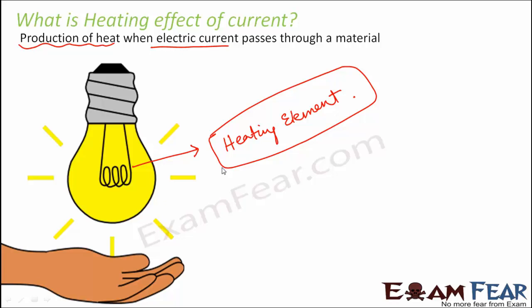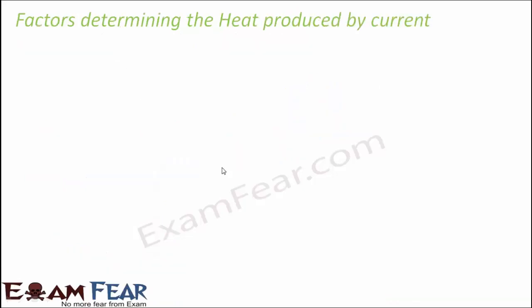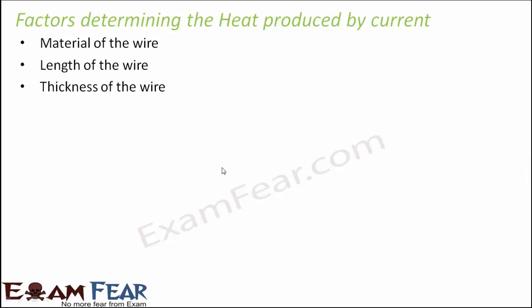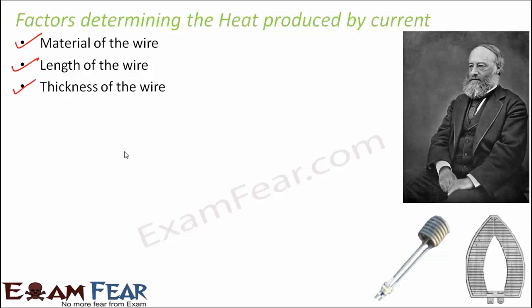Appliances containing such heating elements, when connected to an electric supply and switched on, get heated up. How much heat will be produced by the current? The various factors which determine the amount of heat are the material of the wire, the length of the wire, and the thickness of the wire. Let us look at Joule's law of heating, a law given by the famous scientist Joule. He said that the heat produced by current is proportional to the square of the current, the resistance of the wire, and the time for which the current flows through the wire.